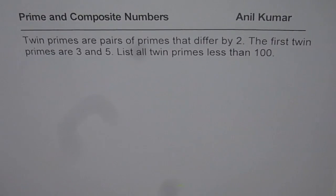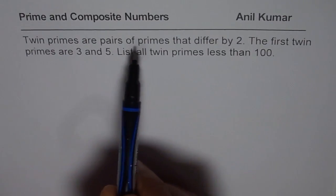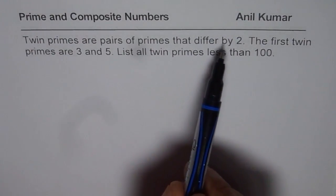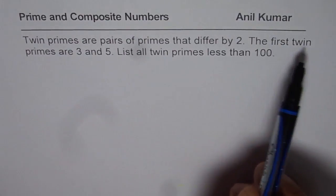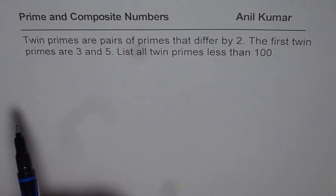I am Anil Kumar and in this video we will discuss twin primes. Now these are very special prime numbers and here is the definition. Twin primes are pairs of primes that differ by 2. The first twin primes are 3 and 5, so 5 minus 3 is 2, so they differ by 2.